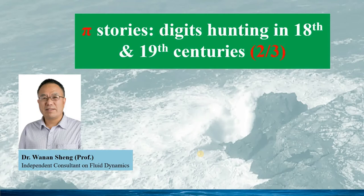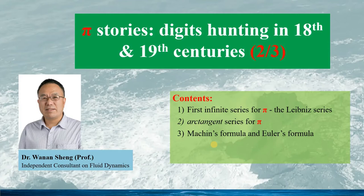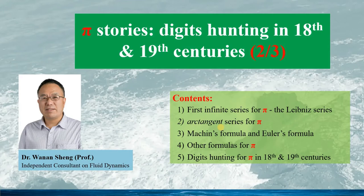Hello, welcome to my talk on Pi Stories: digital hunting in the 18th and 19th centuries. This is the second part of the series talk on Pi Stories. In this part, I will first introduce the first infinite series for Pi — the Leibniz series — then move to arctangent series for Pi, and we'll see Machin's formula and Euler's formula for Pi, and give some other formulas for fast calculating Pi, and finally show the digits hunting for Pi in the 18th and 19th centuries.